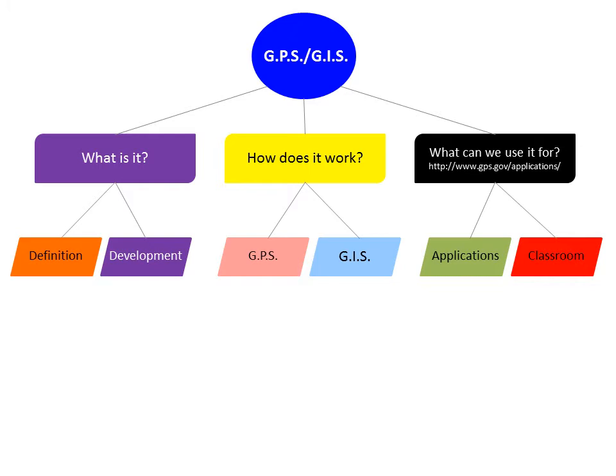Under 'What can we use it for?' I chose Applications and Classroom as subtopics. I chose green for Applications — it's kind of like the grass is greener on the other side — to show how it can be used in various applications. For Classroom, I will be teaching at a school district whose colors are red and black, so I chose red for the classroom.